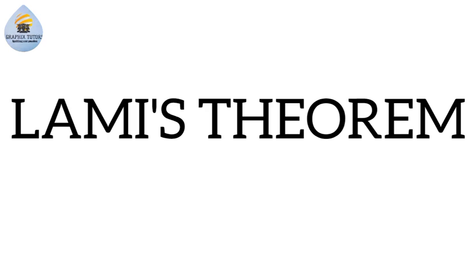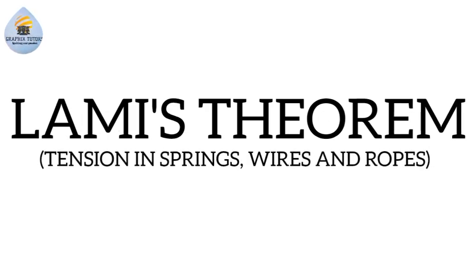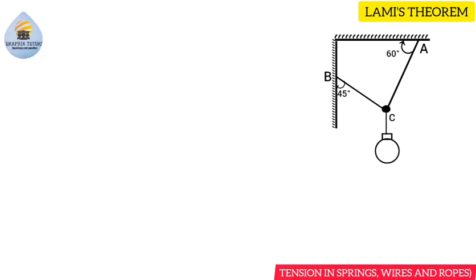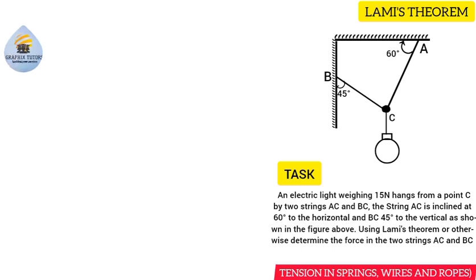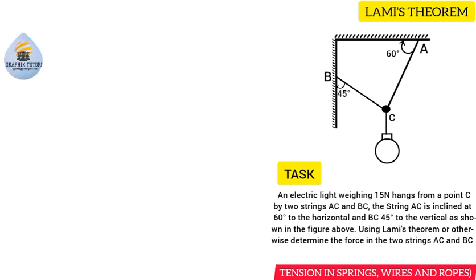Good day everyone, my name is Graphics. If you look at the right hand side of the screen, you see a figure. The question attached to this figure says: an electric light weighing 15 Newton hangs from a point C by two strings AC and BC. String AC is inclined at 60 degrees to the horizontal and BC at 45 degrees to the vertical as shown in the figure. Using Lamy's theorem or otherwise, determine the force in the two strings AC and BC.